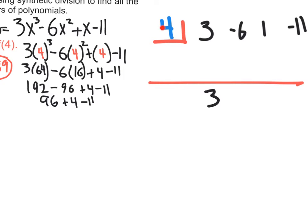And then you go 4 times 3, and we get 12. And as you come down, negative 6 and 12, what do we get? 6. And as we multiply 4 times 6, we get 24. And as we come down, 1 and 24 is 25.